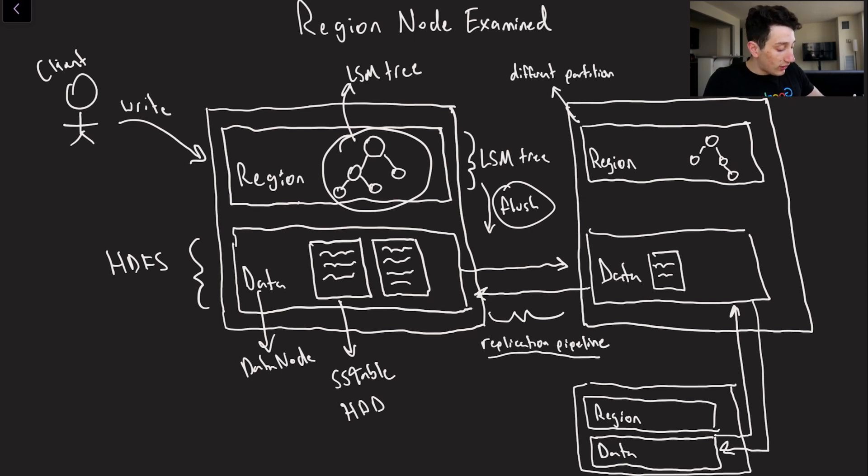Now if you remember from last video, what that basically means is that we've got one data node sending a write to another data node, which sends a write to another data node, and then you pass the chain of acknowledgements all the way back through to the original data node.